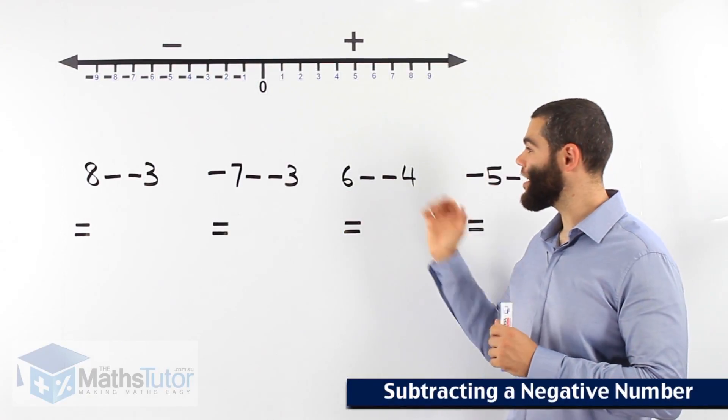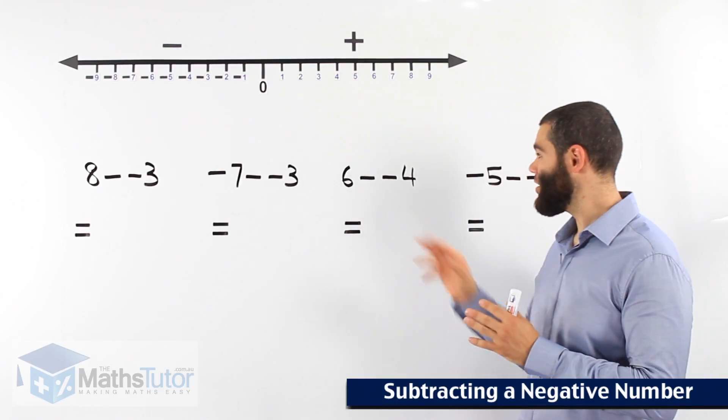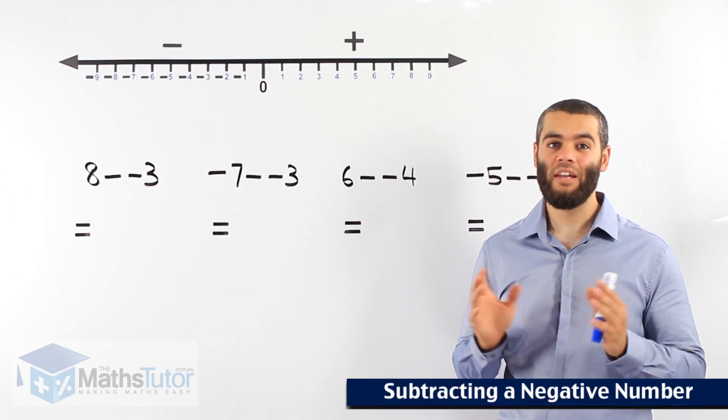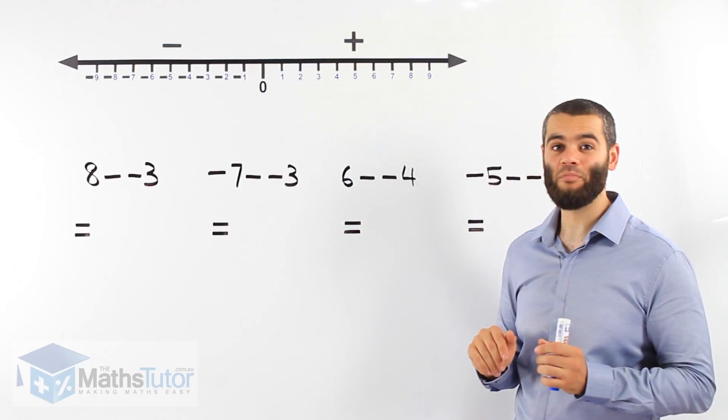You've noticed a question similar like these and you've realized, hang on, there are two negatives sitting side by side. What do I do? Let's see how it's done. It's actually very simple.